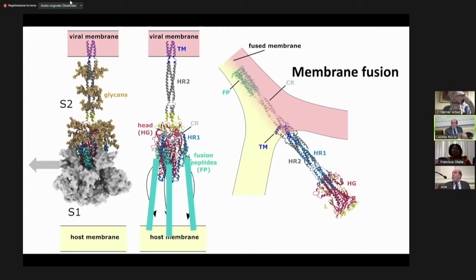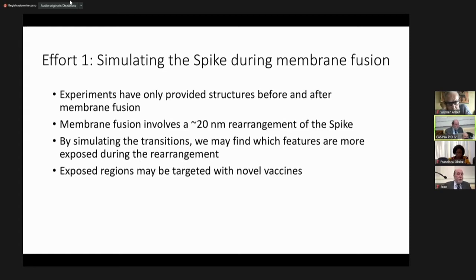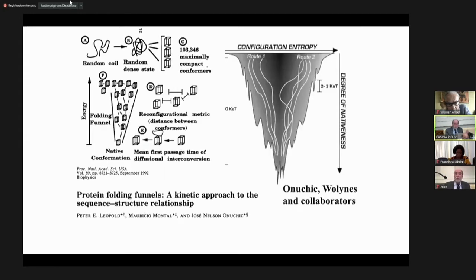Continuing on this topic, what you need is membrane fusion — that's how the virus invades the cells. X-ray crystallographers have given us the structure of this spike protein pre-fusion and post-fusion. We hope in the future to capture these motions in real-time. There's a 20-nanometer rearrangement of these proteins — an enormous transformation.